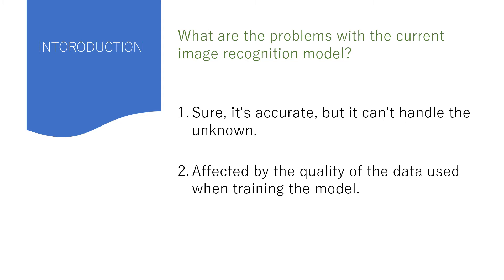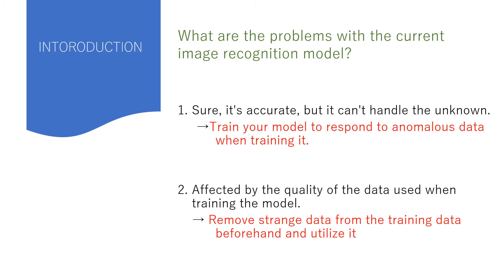Secondly, the performance of a trained model is greatly degraded when the training data contains poor quality data. The accuracy of a machine learning model depends greatly on the quantity of the data it was trained on. In other words, if incorrect data is entered during training, the model is affected by the bias and its accuracy is degraded. We offer the following solutions: one is to train the model to respond to anonymous data as it is entered; the other is to use a subtask during training to remove poor quality images from the training data.